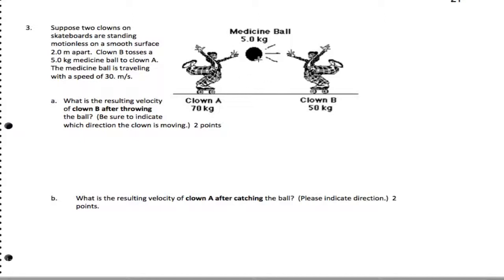First, I'm going to look at the medicine ball, which I will call M, and clown B. So what's going to end up happening is we'll use conservation of momentum because no force and no time is mentioned.